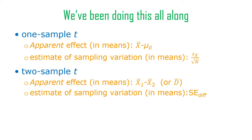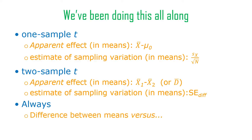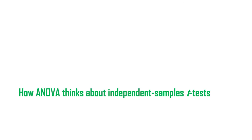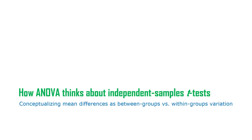We're saying the effect needs to be a certain amount bigger than just random sampling variation. There's always a difference between means in your sample versus the expected difference we would predict would happen just from random sampling variation. This is how ANOVA thinks about independent samples t-tests — this is actually much closer to the mechanism underlying independent samples t-tests. Everything is differences between groups versus within groups.